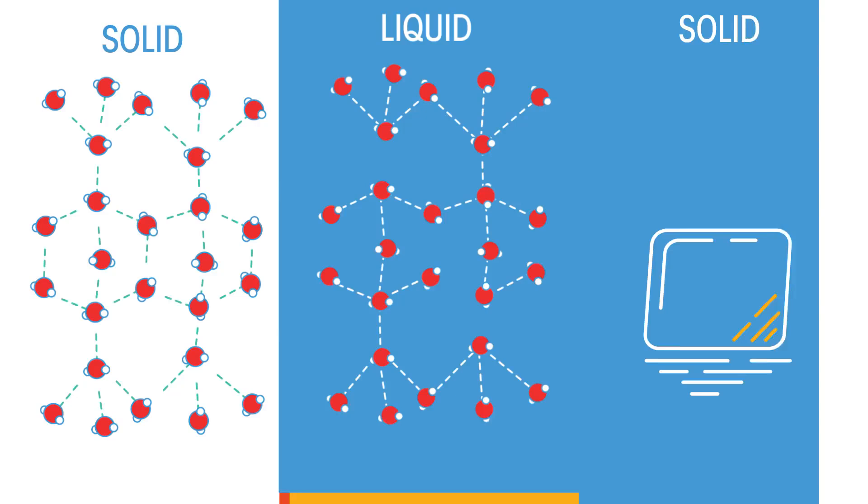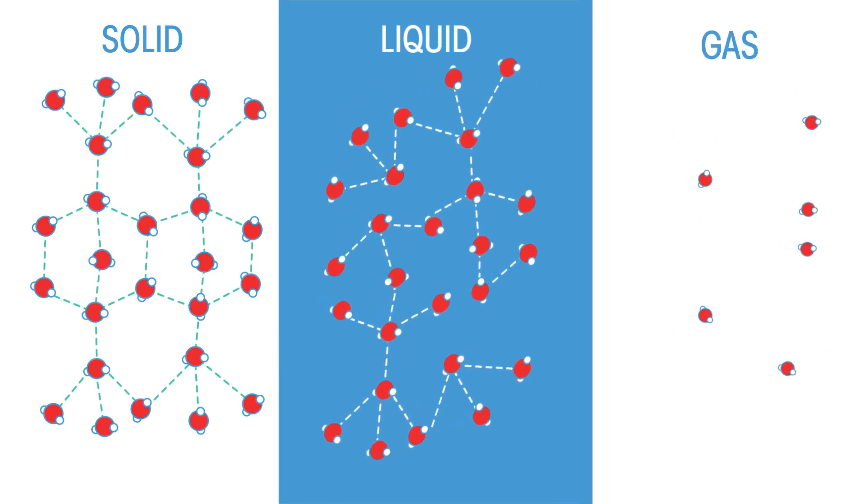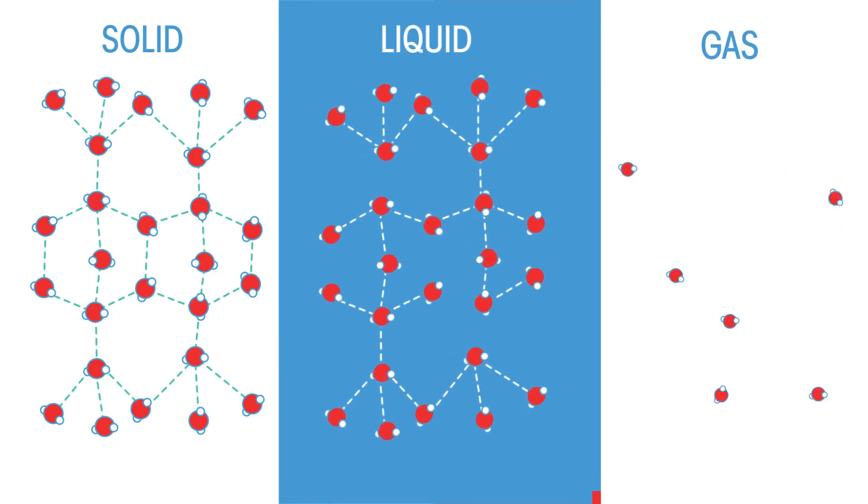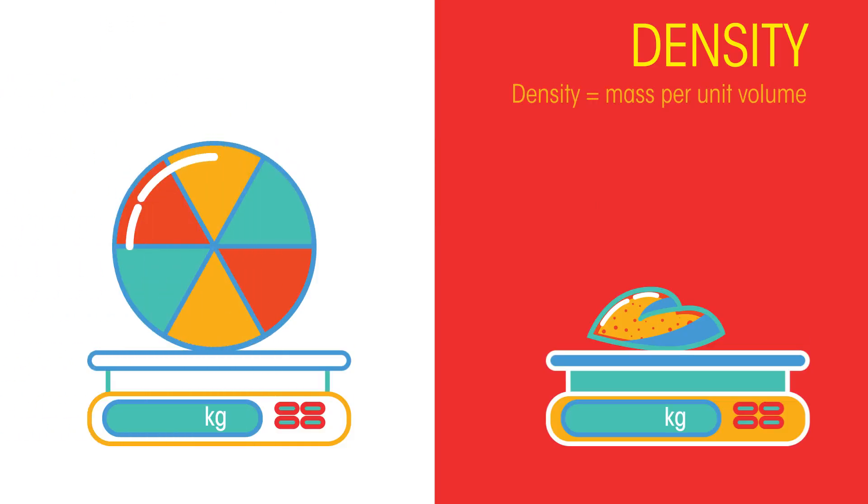Informally, density is a measure of how packed a material is with mass. Density is defined as the mass of an object per its unit volume.